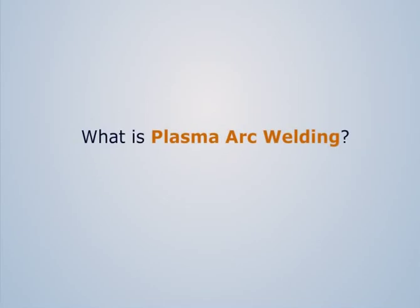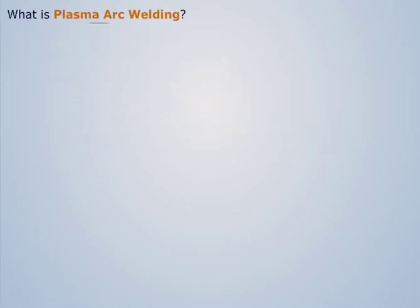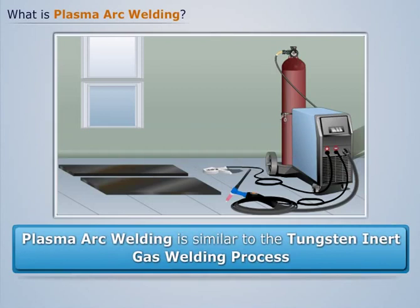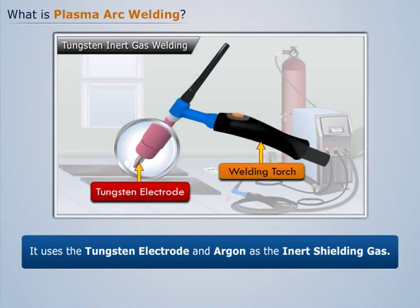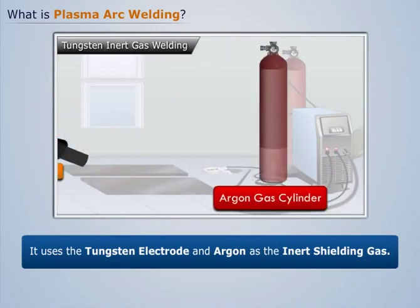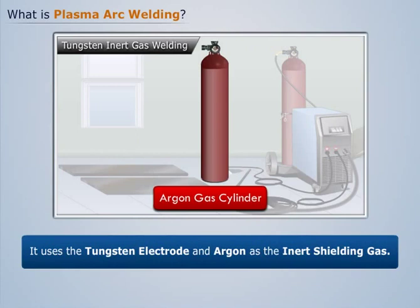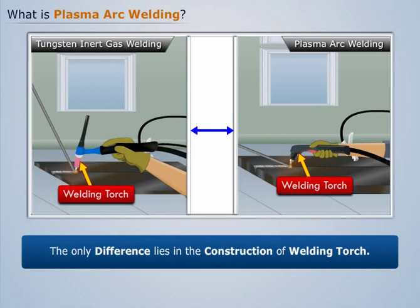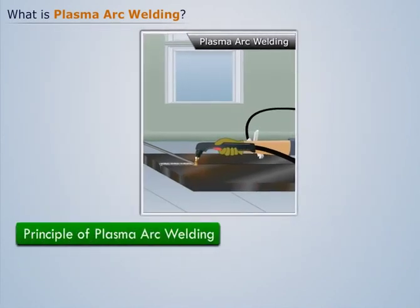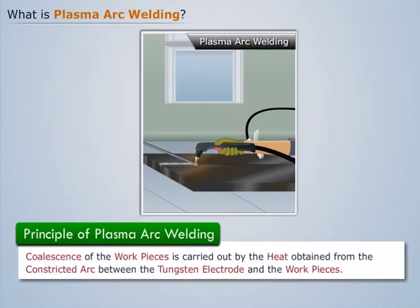What is plasma arc welding? Plasma arc welding is similar to the tungsten inert gas welding process because it uses the tungsten electrode and argon as the inert shielding gas. The only difference lies in the construction of the welding torch. It is based upon the principle that the coalescence of the work pieces is carried out by the heat obtained from the constricted arc between the tungsten electrode and the work pieces.